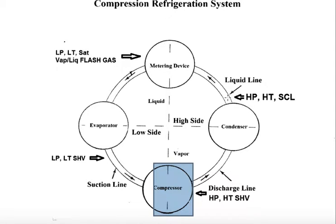Then it discharges from the condenser into the liquid line. The liquid line moves the refrigerant to the metering device. The metering device takes that liquid refrigerant at high pressure and drops it to a low pressure. So we're going from a high pressure, high temperature, sub-cooled liquid to a low pressure, low temperature, saturated vapor — otherwise known as flash gas.